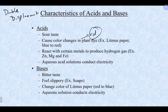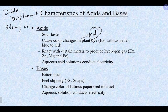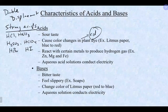Strong acids are also strong electrolytes — they 100% break apart. Some strong acids include hydrochloric acid, nitric acid, sulfuric acid, perchloric acid, hydrobromic acid, and hydroiodic acid. Those are strong electrolytes that completely break apart into solution.